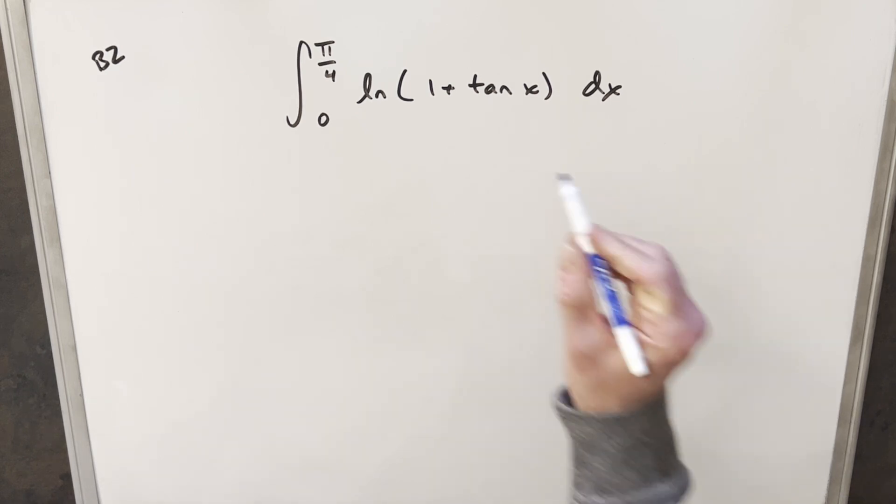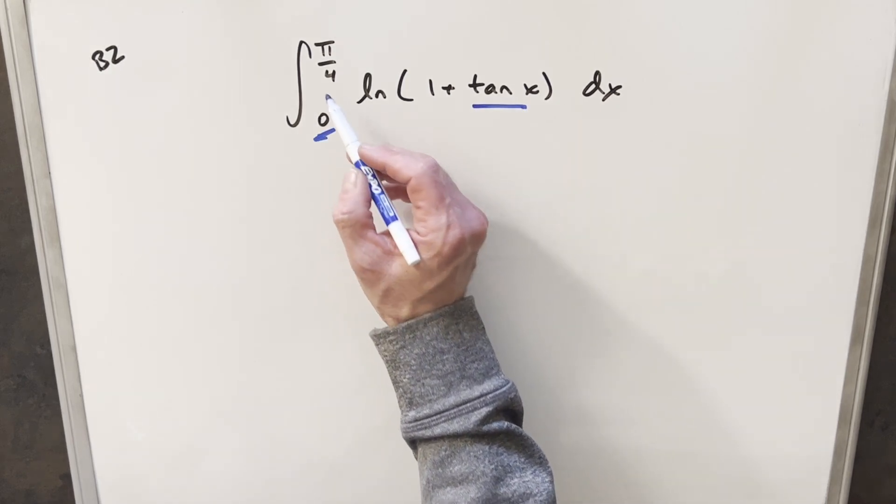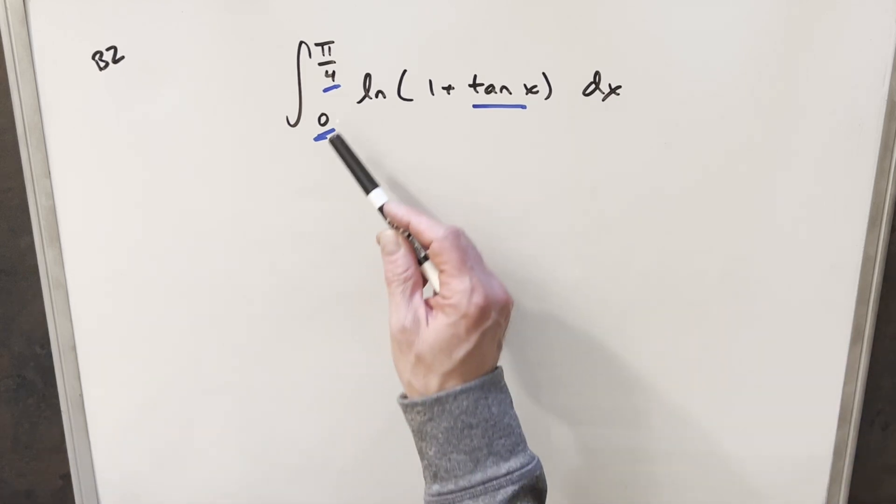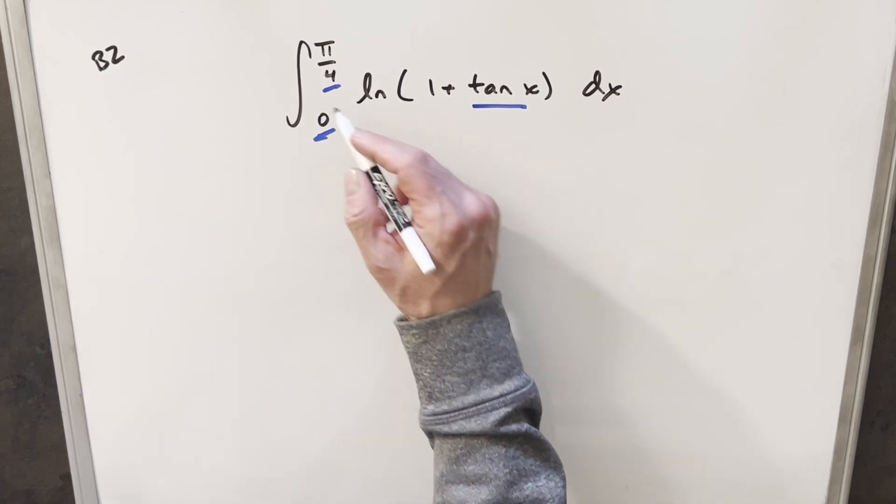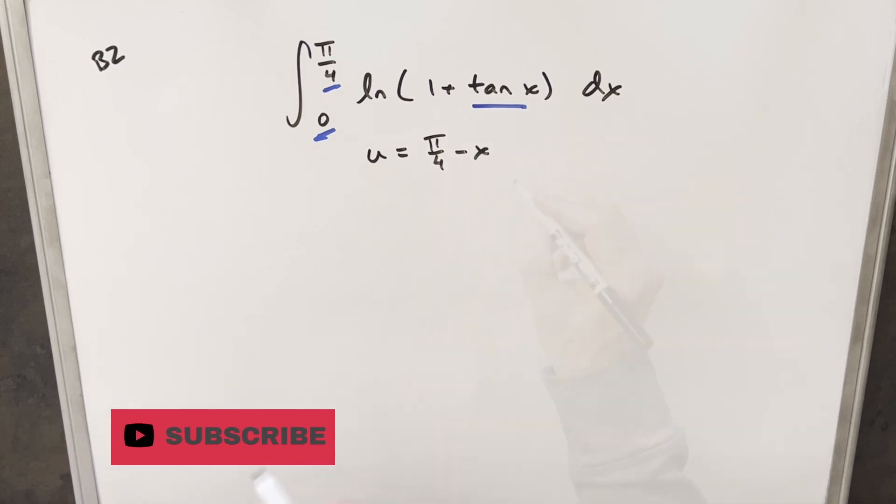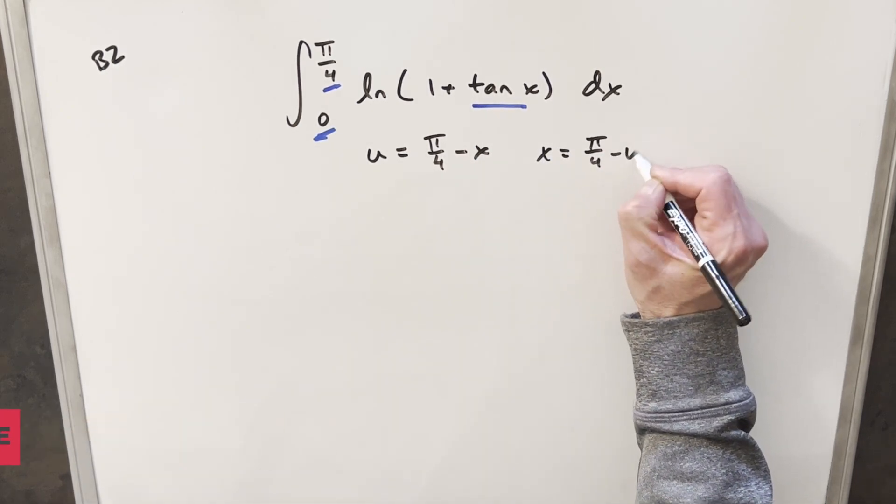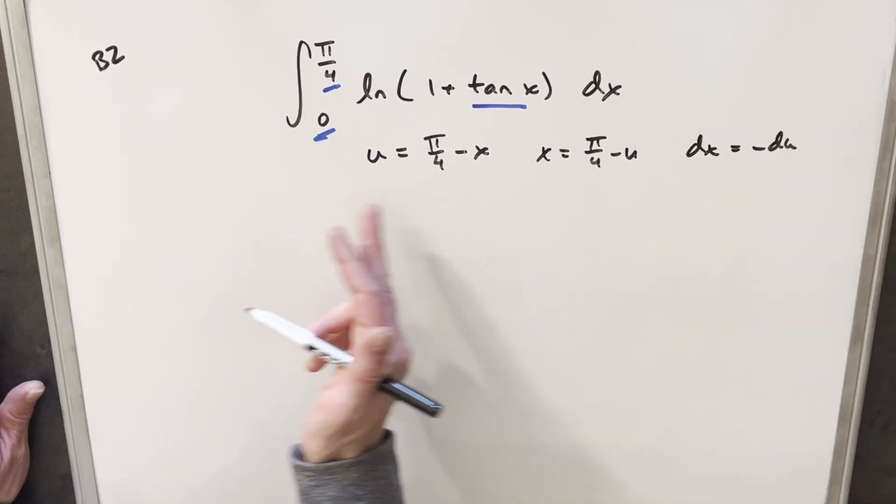The thing I noticed here, just the fact that we've got a trig function here, 0 for the lower bound, it seems like it could help for us to do a U substitution using King's principle, just adding the bounds together. So what I'm going to do for this, let's just add π/4 and 0, and we get π/4 minus x. Rearranging, we can get x equals π/4 minus U, and then dx is minus DU.